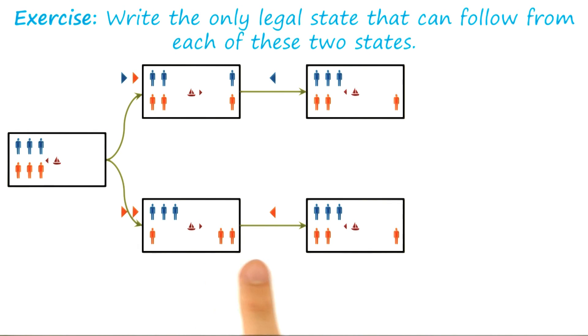Similarly, on the bottom, we could either move both prisoners back to the left, or just one. Moving both would take us back to our original state, which isn't productive. Moving just one, then, is our only legal next state.